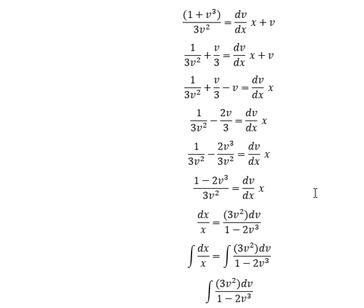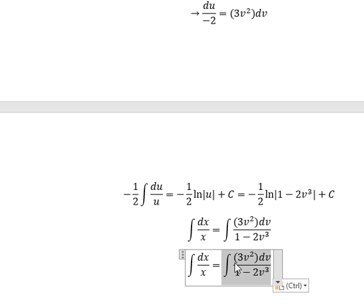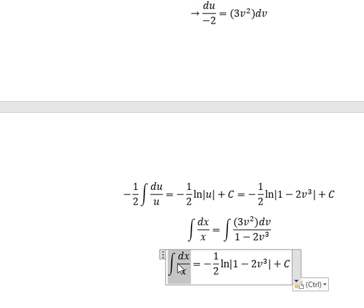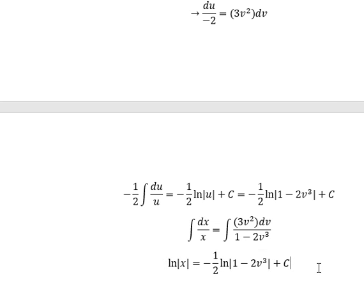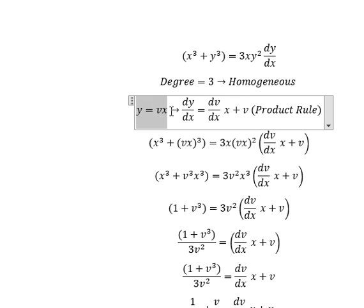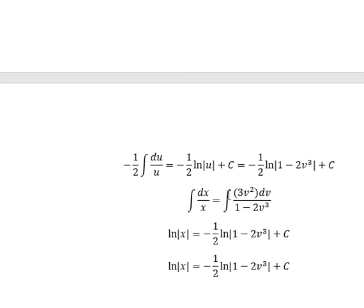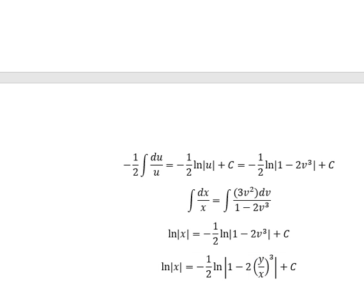So we go back here. The integration of this one gives ln of the absolute value of s. We substitute back for v using v equals y over x, divide both sides by x, and change v back. This is the end. Thank you for watching, see you.